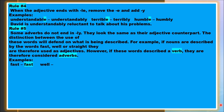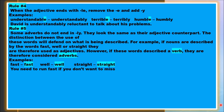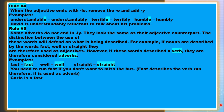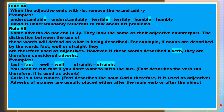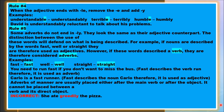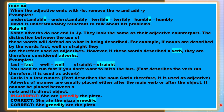Examples of Rule 5: 'You need to run fast if you don't want to miss the bus.' Fast describes the verb run, so it is used as an adverb. 'Carlo is a fast runner.' Fast describes the noun Carlo, so it is used as an adjective. Also note: adverbs of manner are usually placed after the main verb or after the object. Incorrect: She ate greedily the pizza. Correct: She ate the pizza greedily, or She greedily ate the pizza.